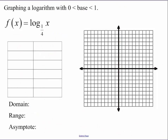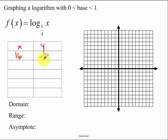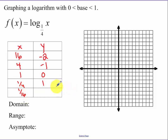Now let's do an example where our base is a fraction. We have an x and a y. So let's pick powers of 1 fourth. If you plug in 16 for x, you're going to get negative 2 out. If you plug in 4 for x, we get negative 1 out. When you plug in 1, we get 0. When we plug in 1 fourth, we get 1. And when I plug in 1 sixteenth, we get 2.